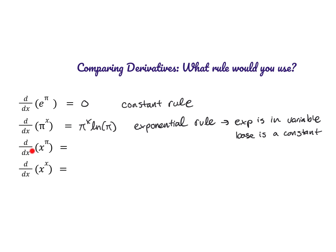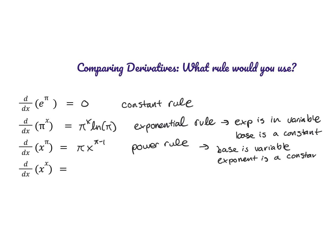Next, the derivative of x to the power of pi. Here we just use the power rule, giving pi times x to the power of pi minus 1. We use the power rule because the base is the variable and the exponent is a constant — this is just like saying x cubed or x to the fourth, so don't be fooled by seeing pi there.